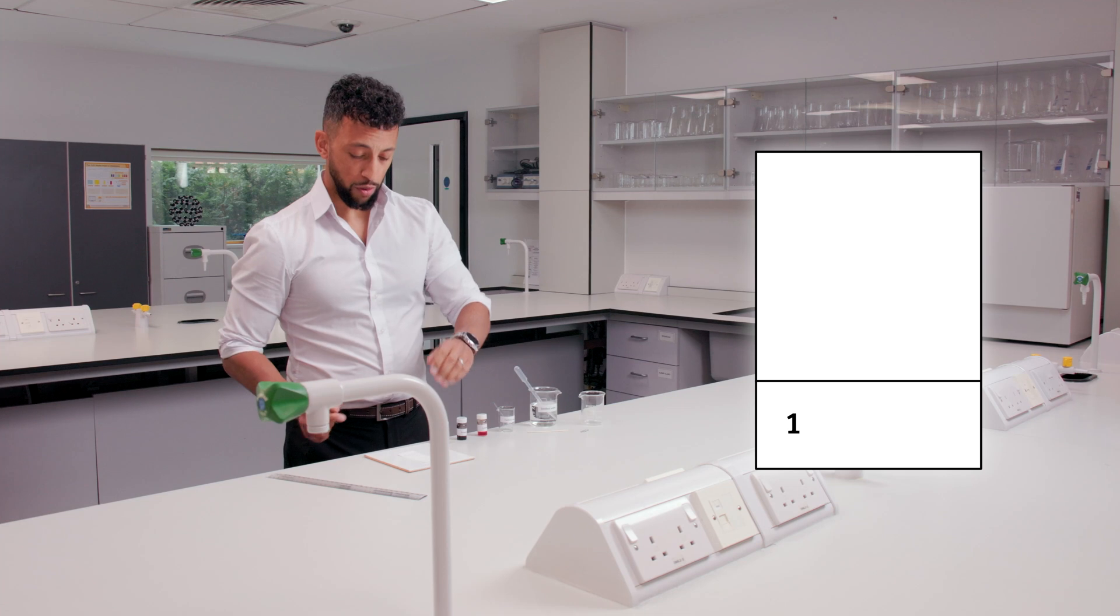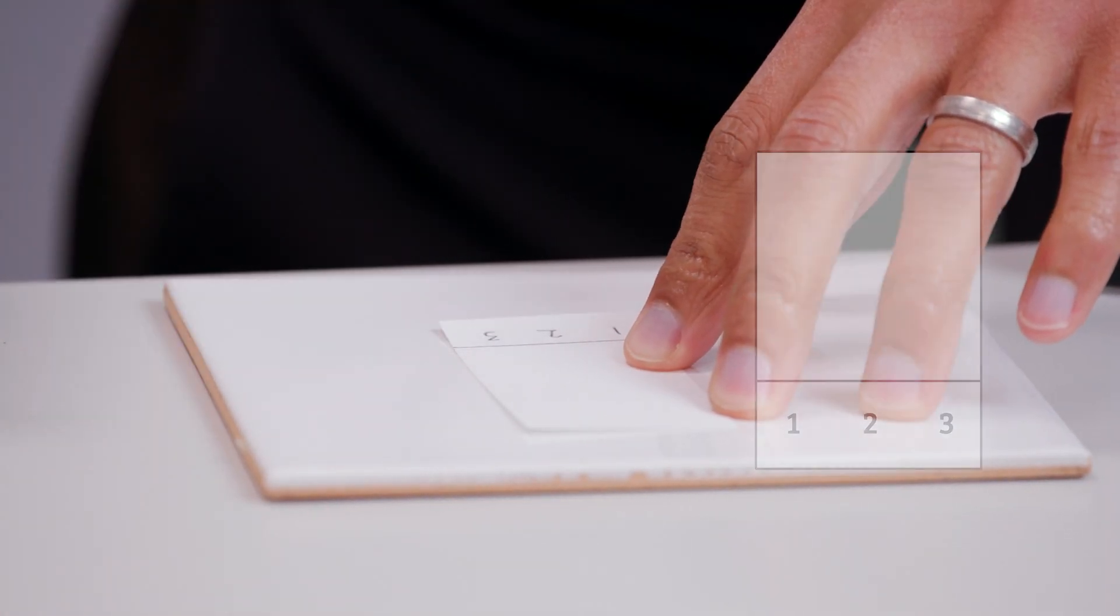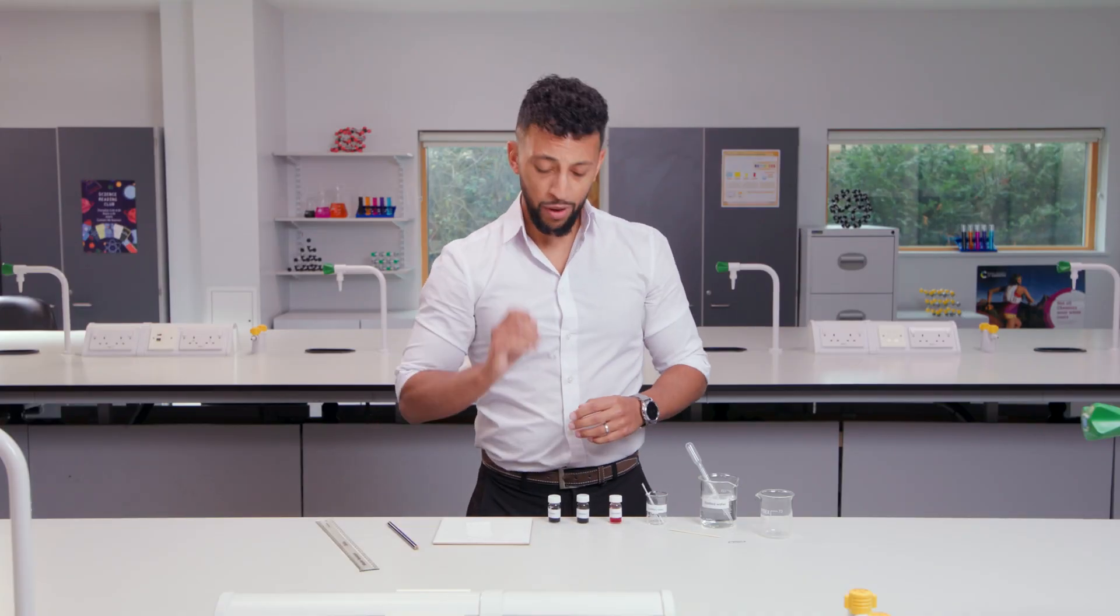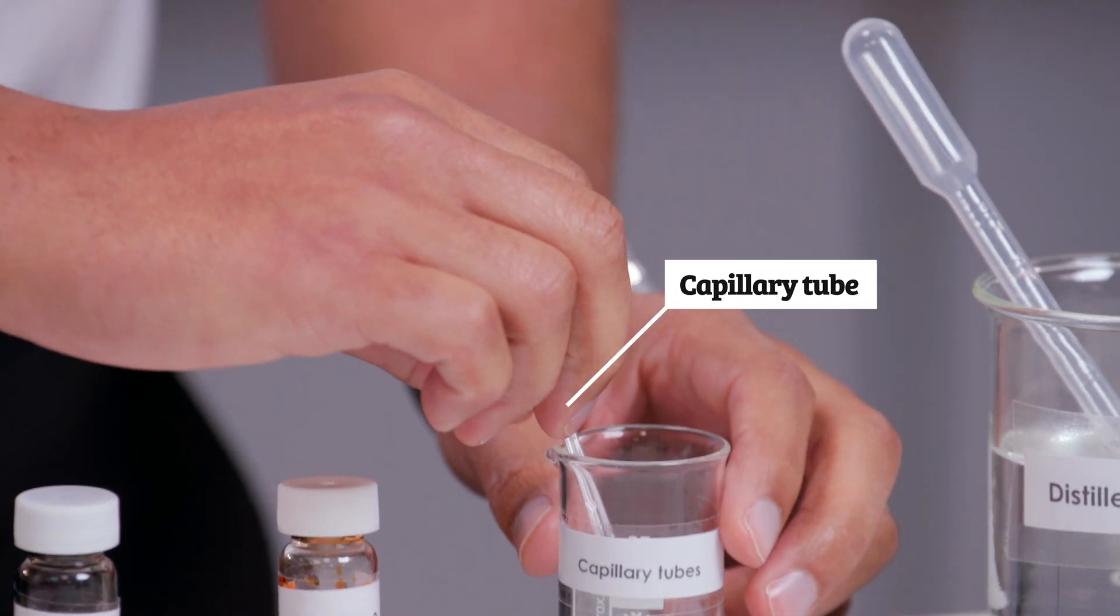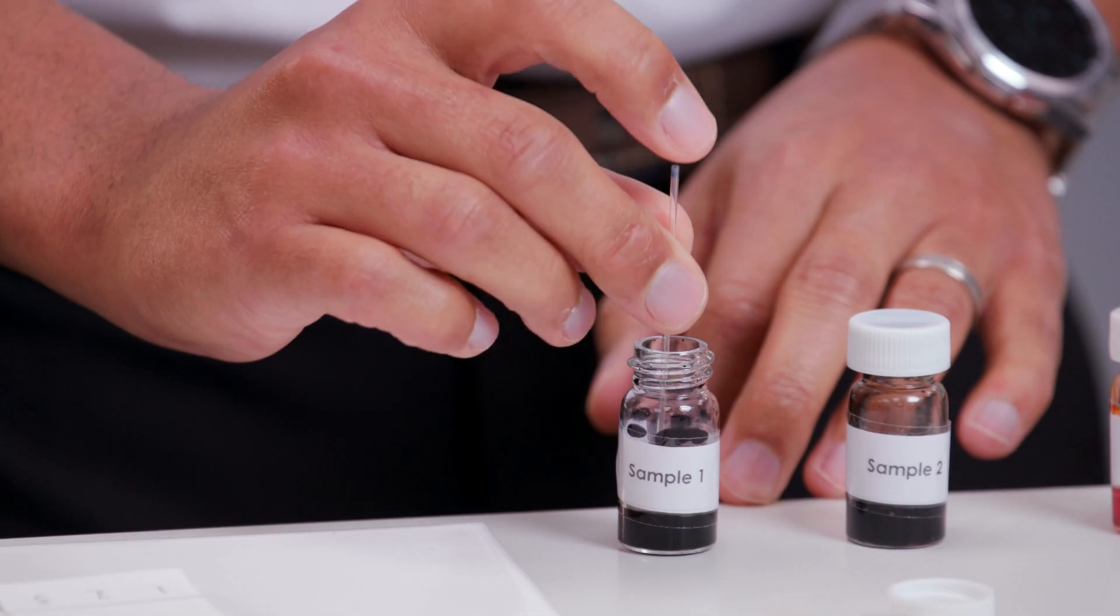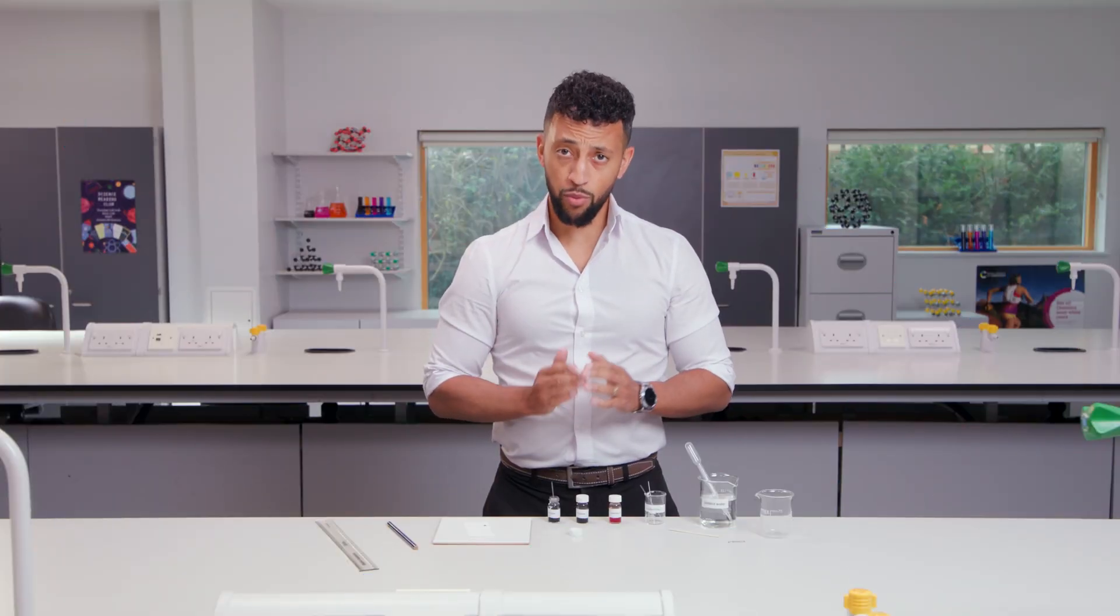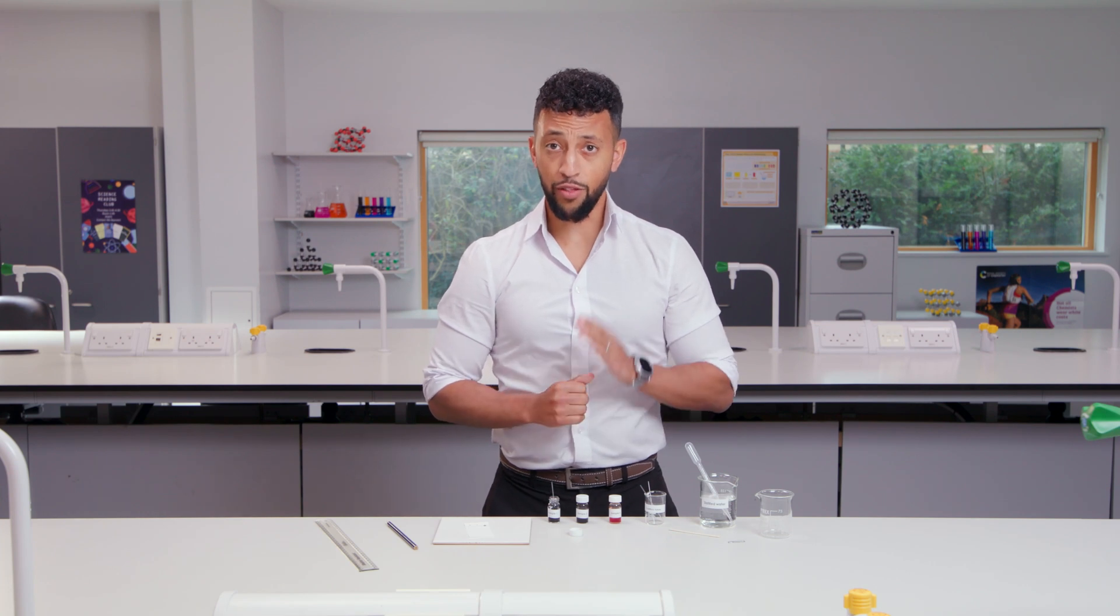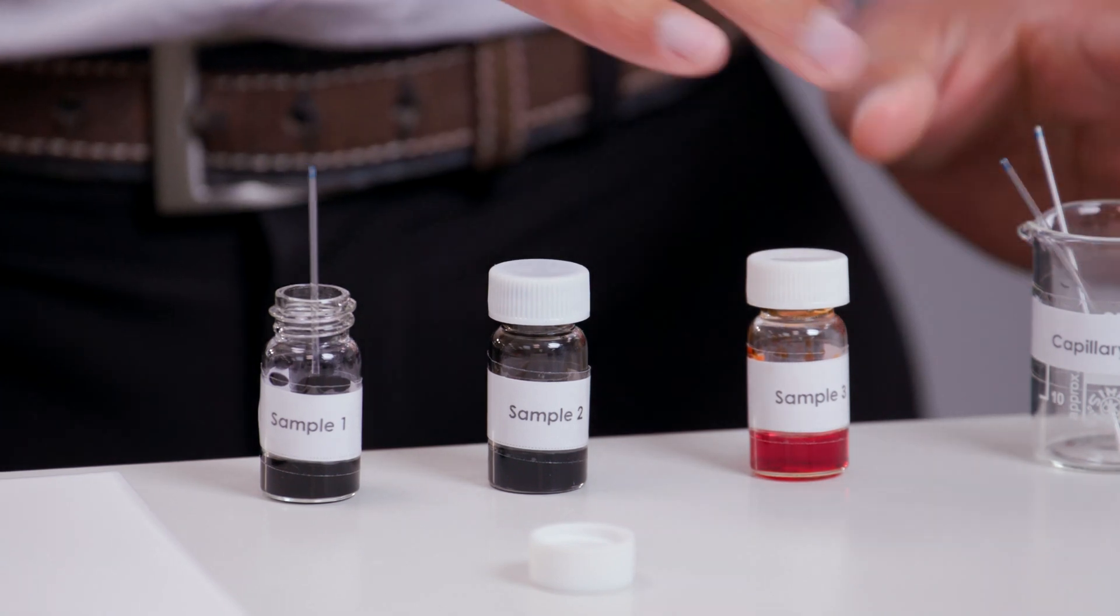Label the paper with samples one, two and three. I now need to add a small amount of my first sample by dipping a capillary tube into the ink just like this. My second sample is a different black ink and the third sample is an orange ink that I think is pure. I'm now going to add them.